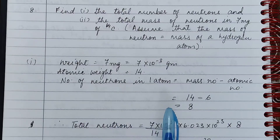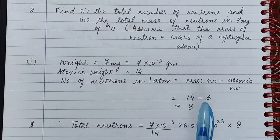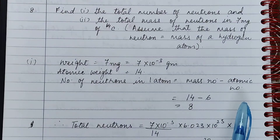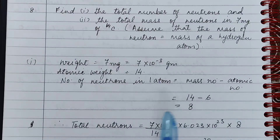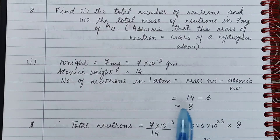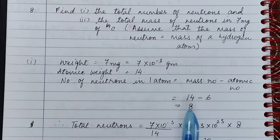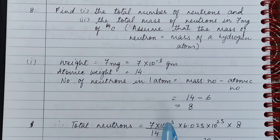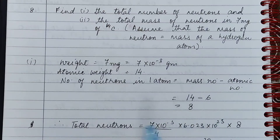The number of neutrons in one atom is equal to the mass number minus the atomic number. The mass number of carbon-14 is 14 and its atomic number is 6, so 14 minus 6 equals 8. Therefore, the number of neutrons in one atom of carbon-14 is 8.